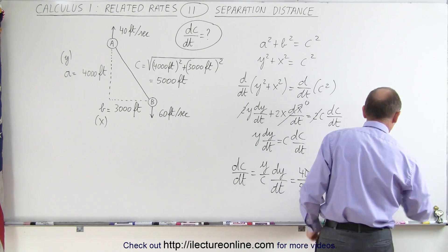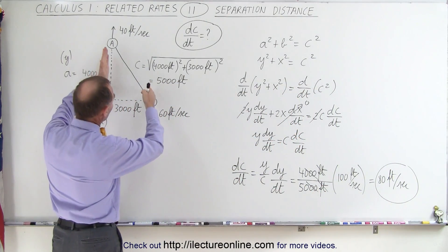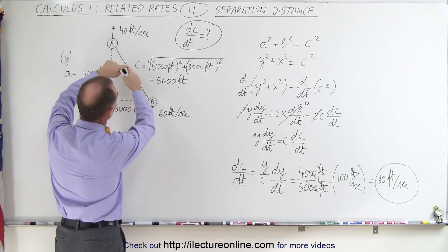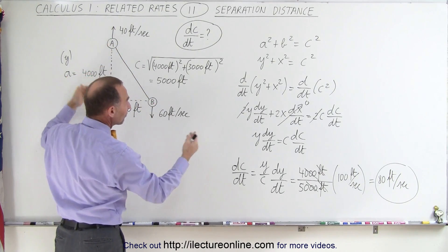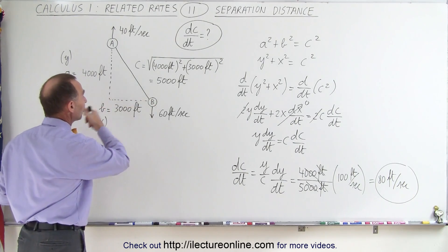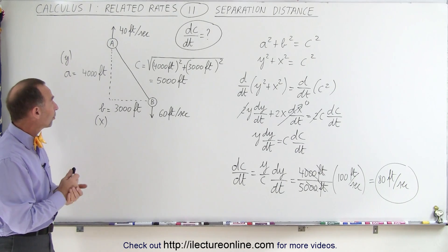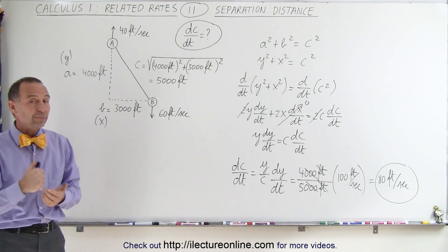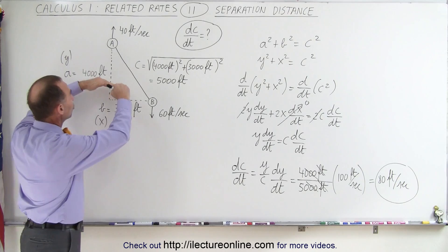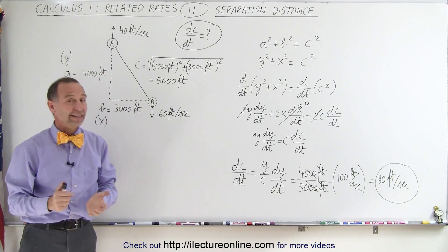Now, that's kind of a surprising result, because we know that in this direction, they're separating at 100 feet per second, but along the diagonal it's only 80 feet per second. The reason for that, of course, is there's no change in distance in the horizontal direction. So that's the result. The distance between A and B is changing at 80 feet per second, which is less than the change in the Y direction or the vertical direction. And that's how it's done.